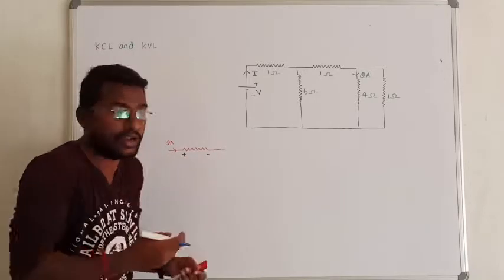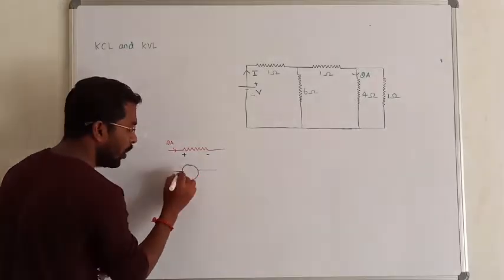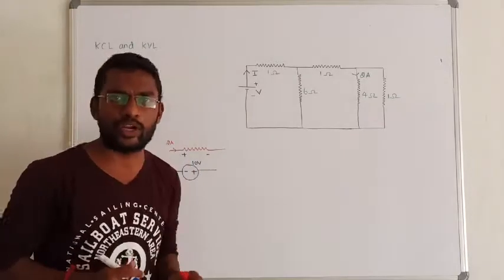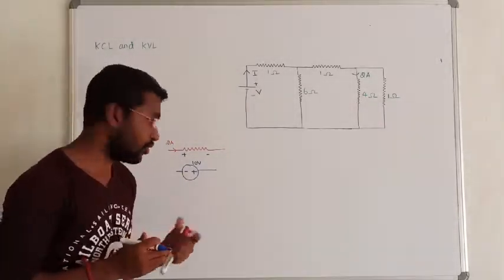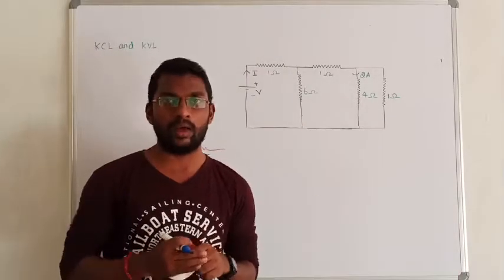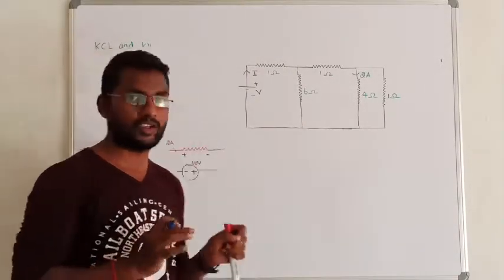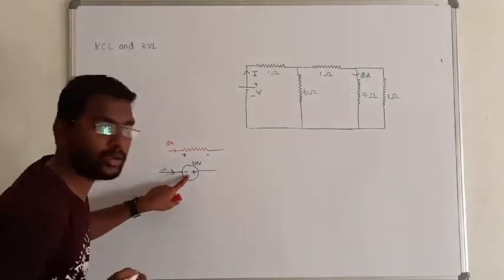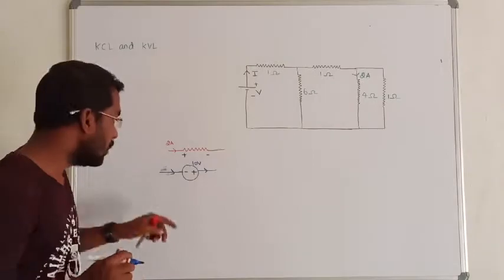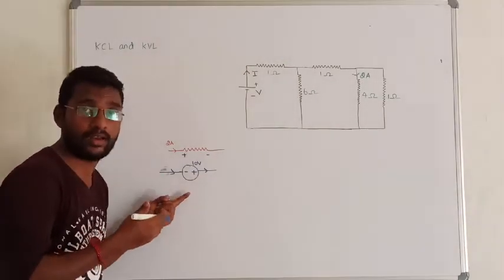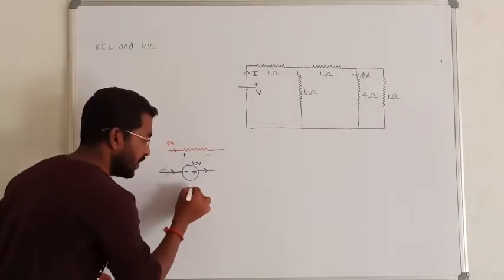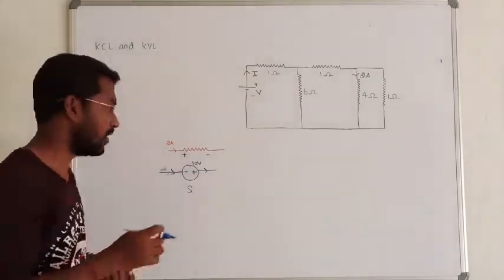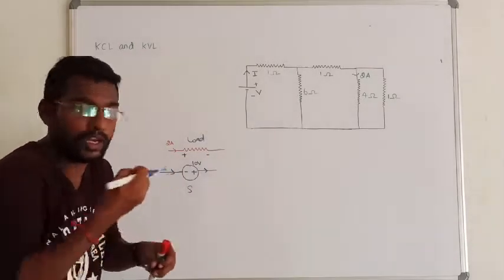Suppose this is a source — a voltage source. If the voltage source is minus on one side, the other will be plus, representing 10 volts. When we have to calculate power, we need to predict the direction of the current. For a source, the current leaving point is plus and entering point is minus. That is the source element. For a load element, the current entering point is plus and leaving point is minus — this element absorbs power. The source delivers power.